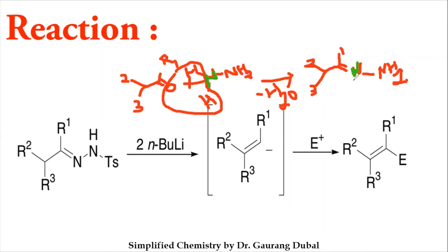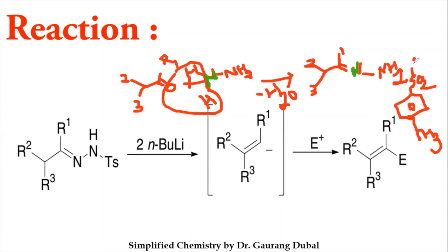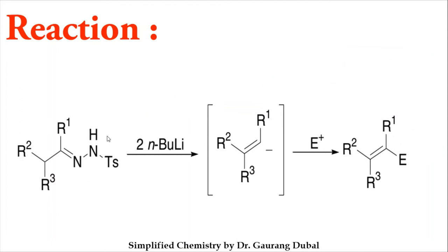Now we react the hydrazone with tosyl chloride — tosyl meaning para-tolylsulfonyl chloride, which has a CH3 group on the benzene ring and an S=O2 group. One hydrogen from the hydrazone and one Cl from tosyl chloride are lost as HCl, and formation of the N–S bond results in the tosylated hydrazine (tosylhydrazone) compound. This clearly shows how tosylhydrazone is formed.